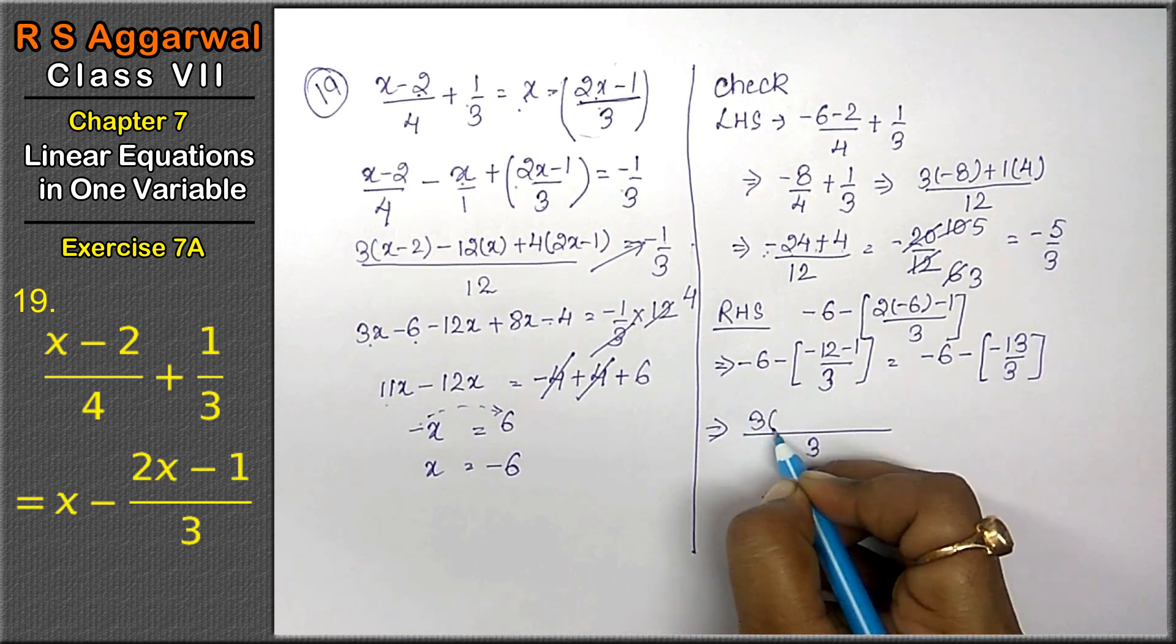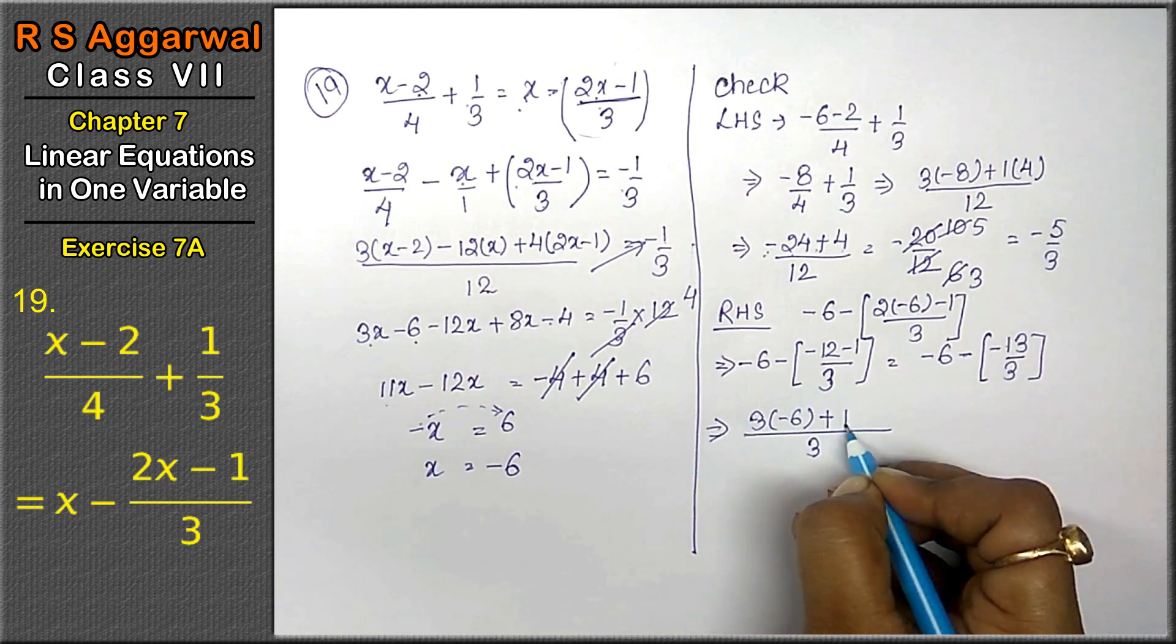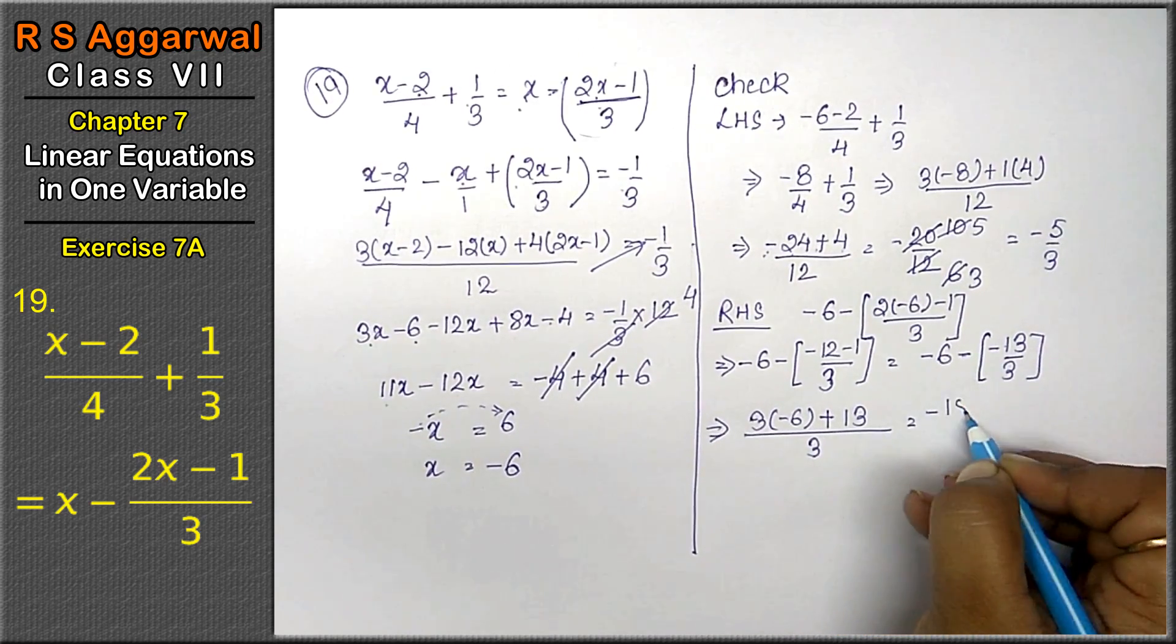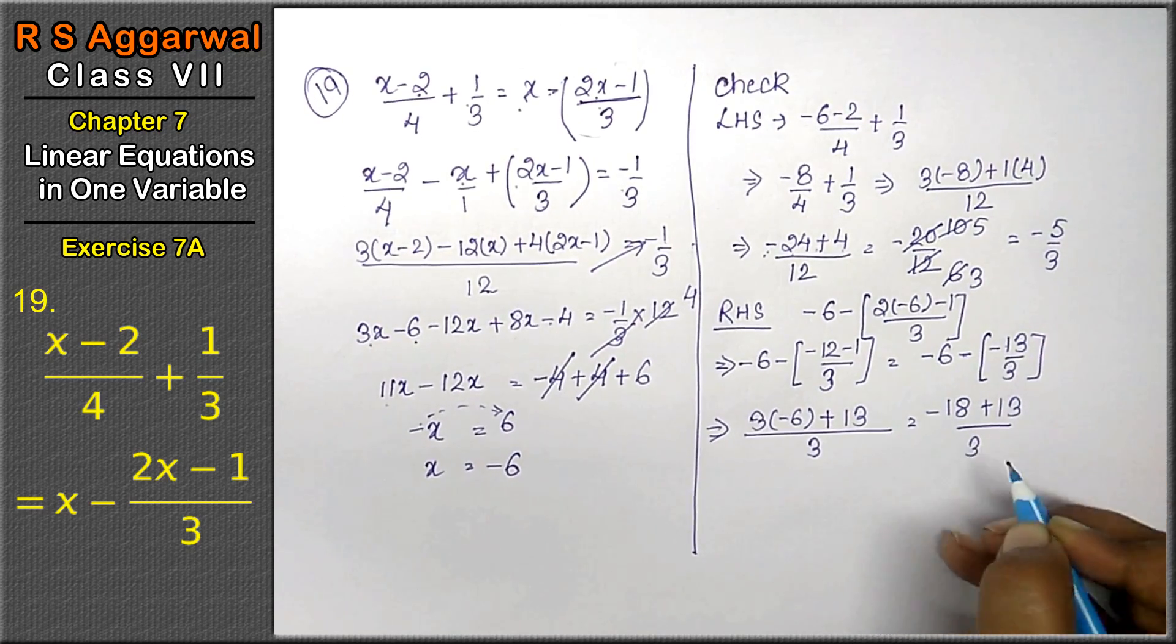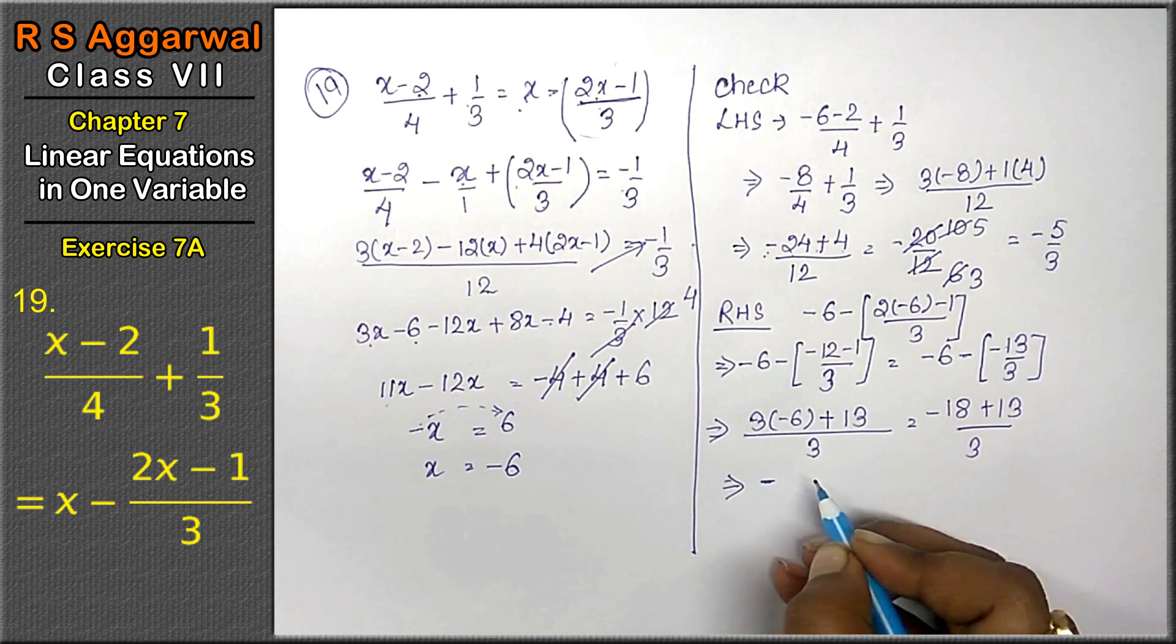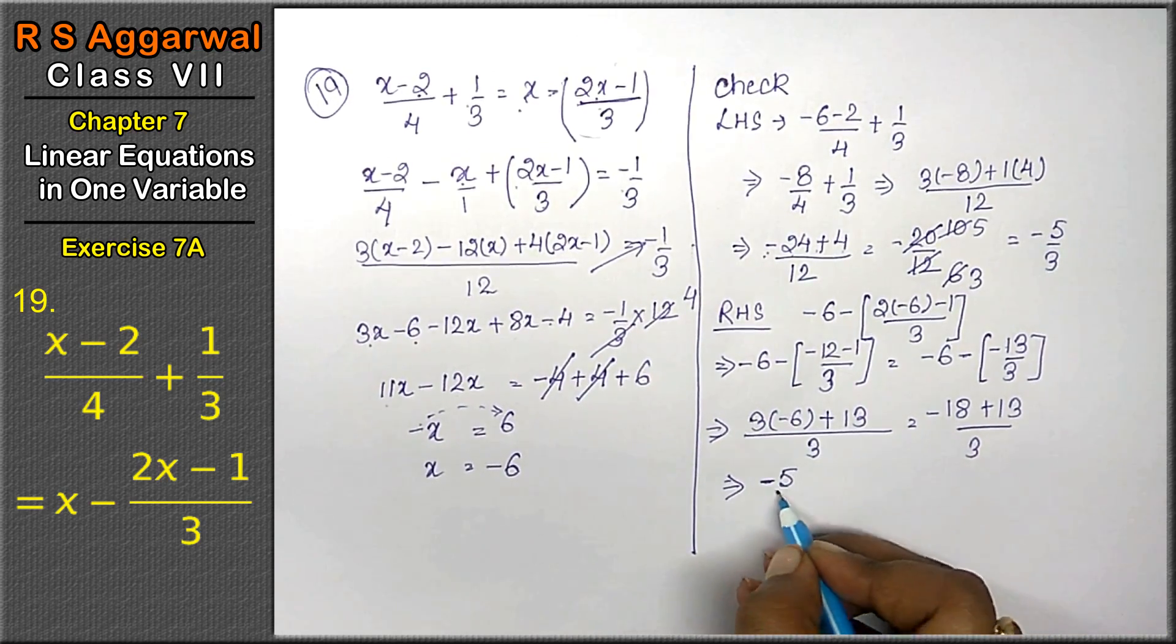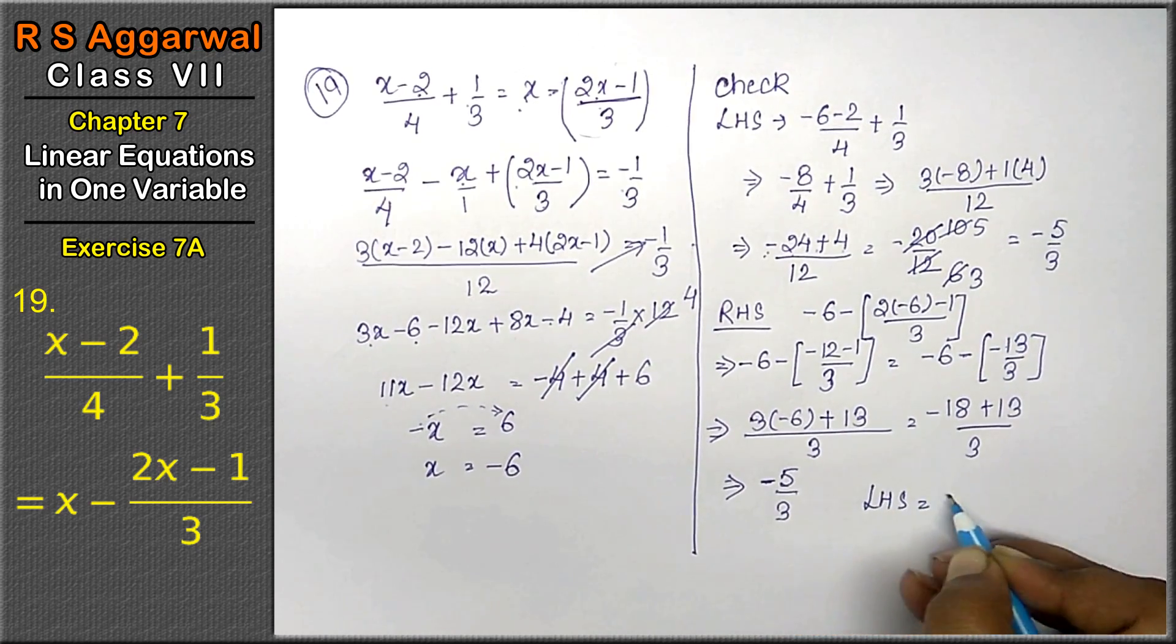Taking LCM 3: (3×-6 + 13)/3 = (-18 + 13)/3. Opposite signs, so subtract: 18 - 13 = 5, giving -5/3. Left-hand side equals right-hand side.